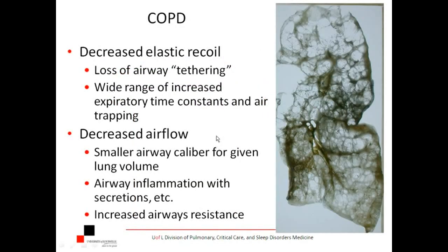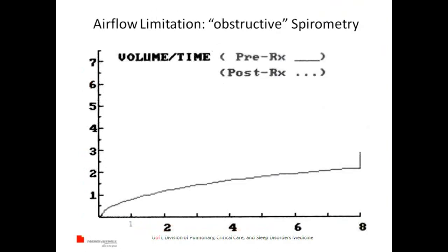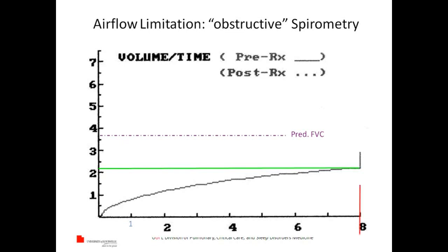In COPD we're obviously going to see a different type of spirogram. This is a lung from a transplant — this is why the person was transplanted. You can see the loss of tissue, more like panlobar emphysema. What happens is you lose airway tethering — the airways become floppy. Nice elastic lungs keep the airways open. When someone does a forced expiration, the airways flop down and all the air takes a lot longer to get out. This veteran from Atlanta had a spirogram showing a long slope, barely plateauing at eight seconds.